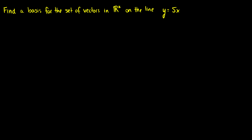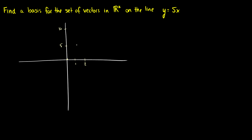What if we're asked to find a basis for the set of vectors in R2 that lie on the line y equals 5x? Drawing this visually, the line passes through points like (1,5) and (2,10). I want to find a set of vectors that will span y equals 5x and be linearly independent.